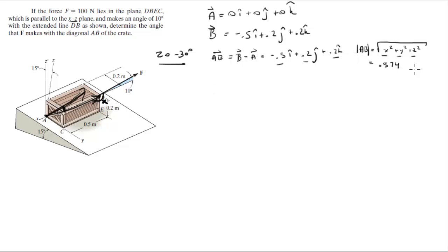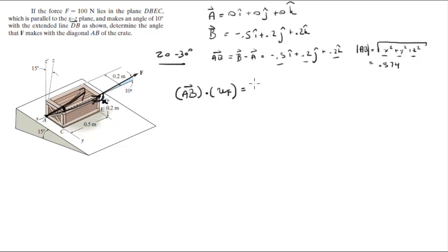Now that you have the magnitude of the vector, all you have to do is remember the formula that says the dot product of AB with — in this case — the unit vector of F, is equal to the magnitude of AB times the magnitude of the unit vector F times the cosine of beta.